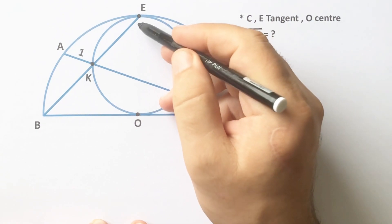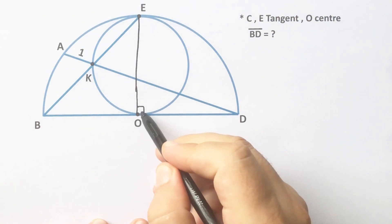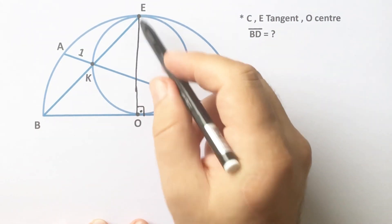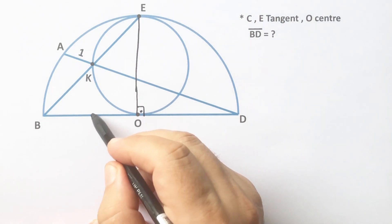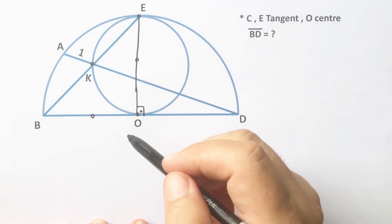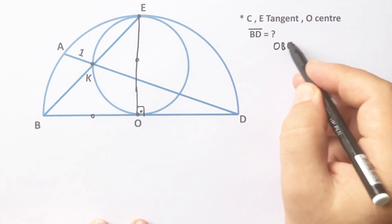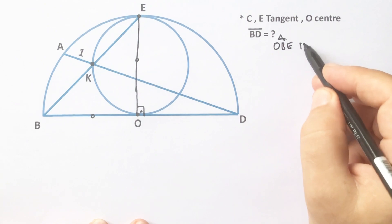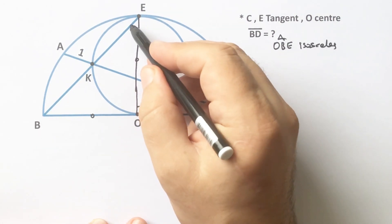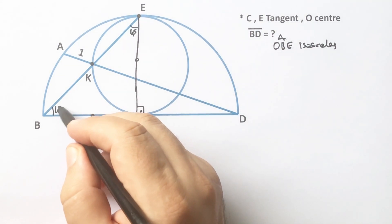First of all, we know that if two circles are tangent like this, if we connect their radii, this line must be linear and this angle must be 90 degrees because of tangency. Notice that we get an isosceles right triangle, and therefore this angle must be 45 degrees and this angle is also 45 degrees.